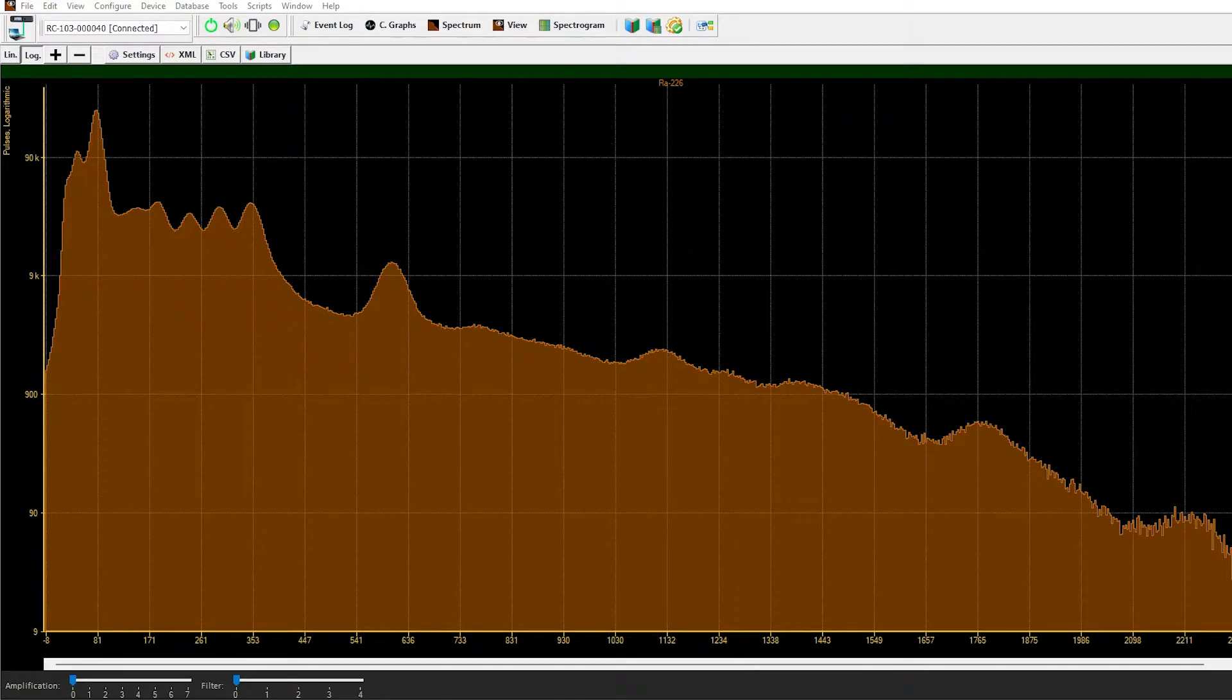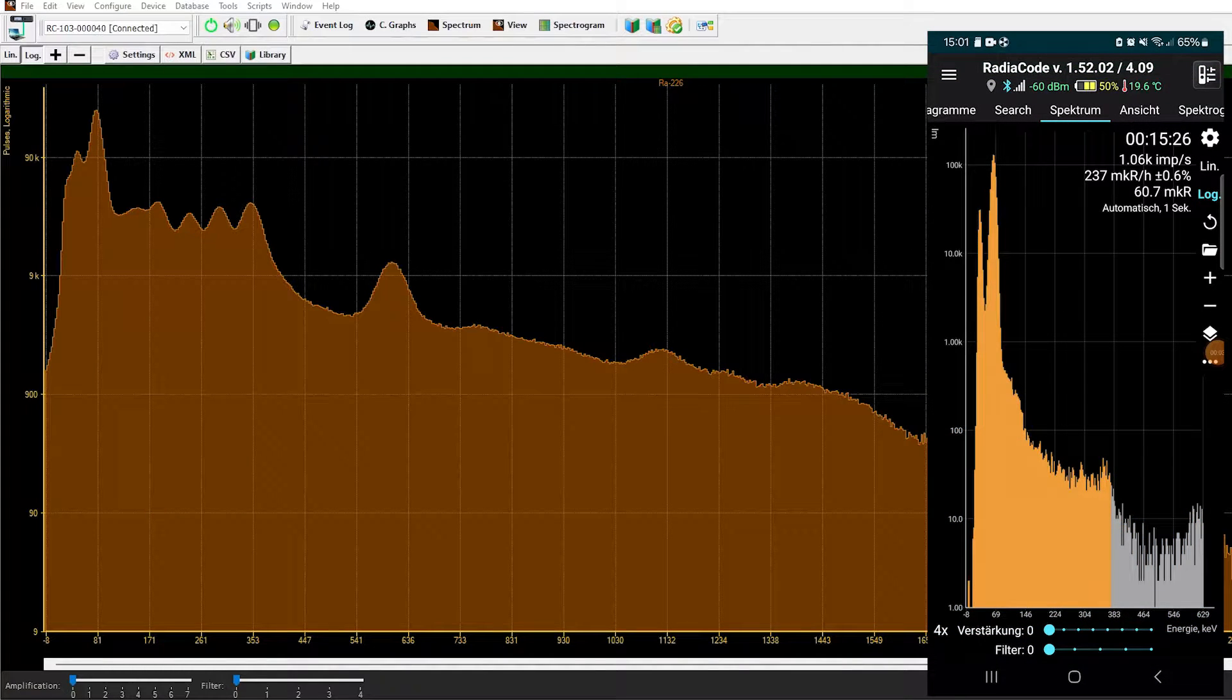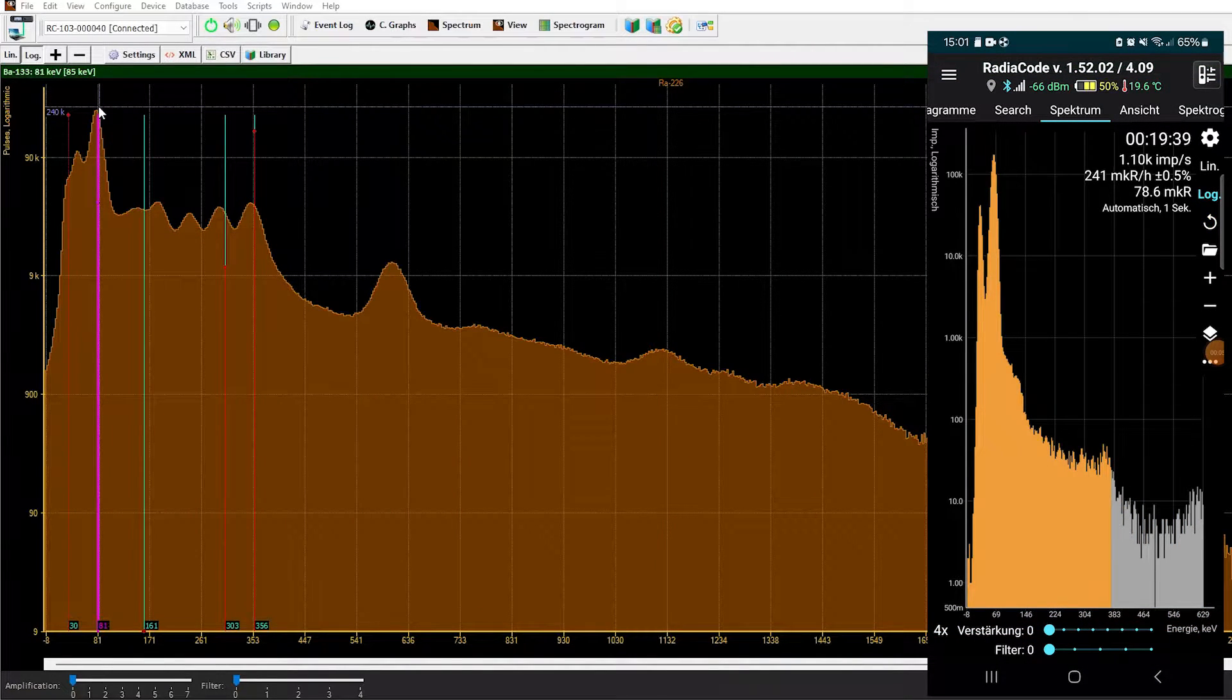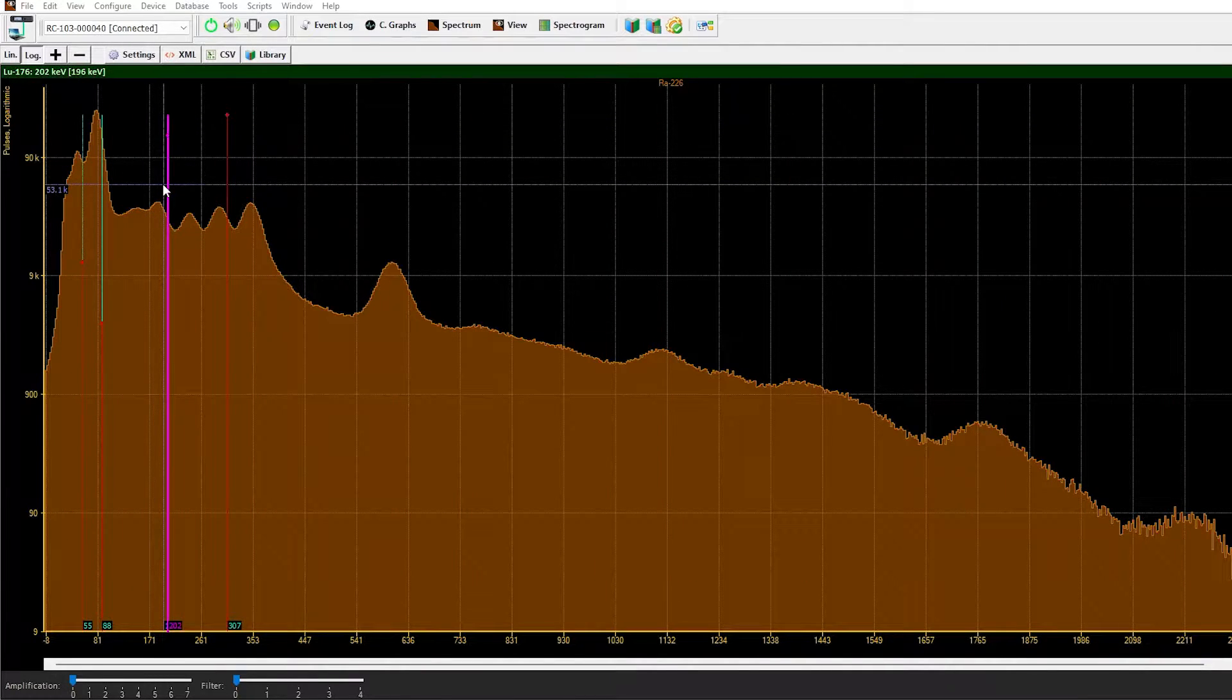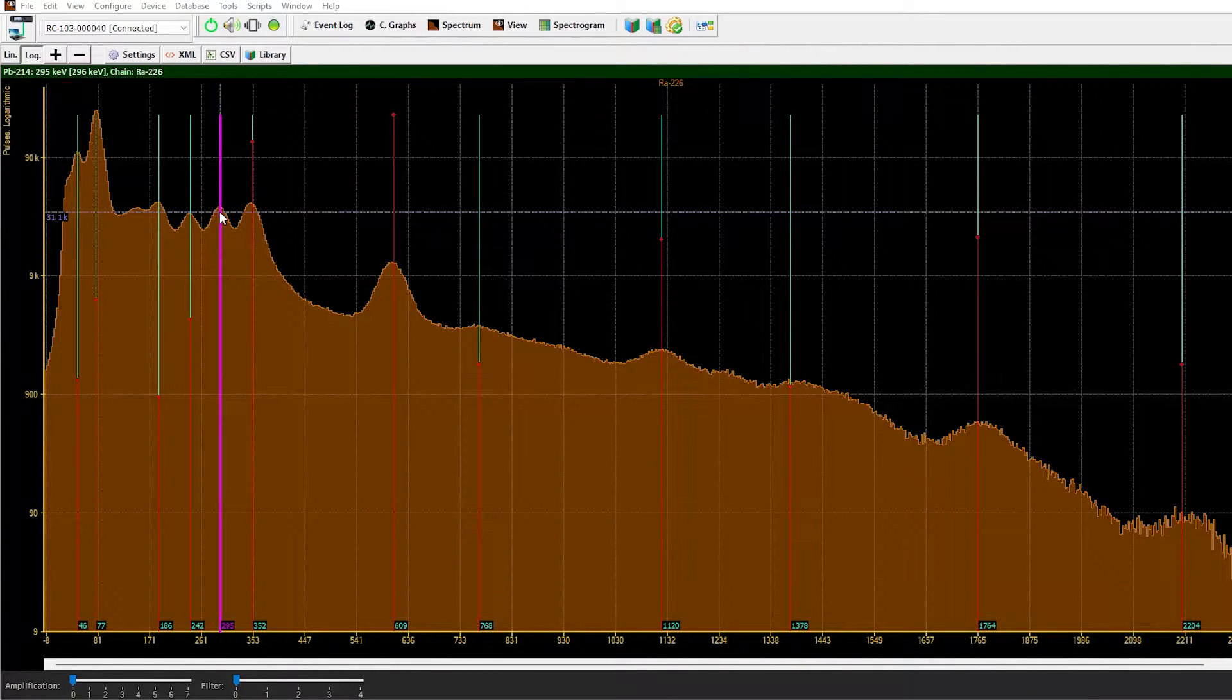Here I have the PC version of the Radiacode app opened. Since the phone version doesn't look great on a normal YouTube video in my opinion, the pros already know what sample this is. I can hover over the peaks and it shows me which energy I selected and where this peak belongs to according to its database. It's totally correct. That's from the radium-226 sample.